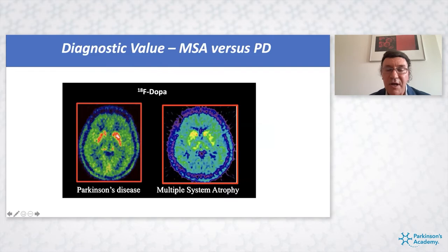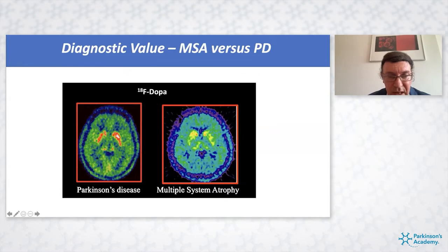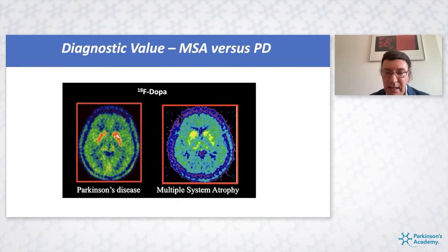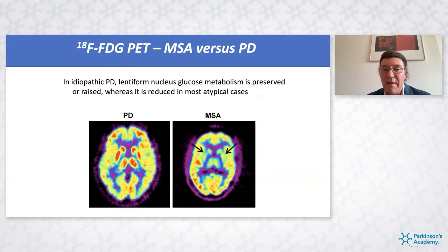The DAT scan can be very useful to differentiate parkinsonism from other conditions, but it's not really useful to differentiate Parkinson's from atypical parkinsonism. In practice, with a fluorodopa scan, if you compare a Parkinson's patient with an MSA patient matched for disease duration, in Parkinson's there is a trend of reduction in the posterior putamen, while in MSA there is a more homogeneous reduction of dopaminergic function in the striatum. However, there is very considerable overlap — so don't use that scan to differentiate Parkinson's from atypical parkinsonism as it won't give you a clear answer.